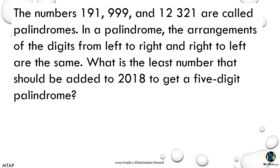The numbers 191, 999, and 12,321 are called palindromes. In a palindrome, the arrangement of the digits from left to right and right to left are the same. What is the least number that should be added to 2018 to get a five-digit palindrome?